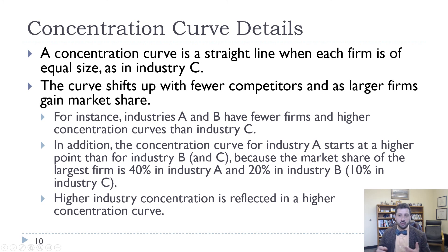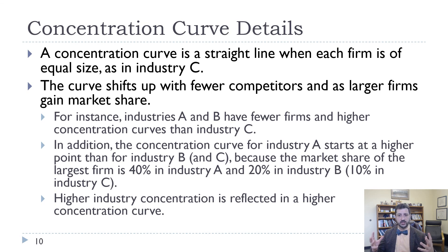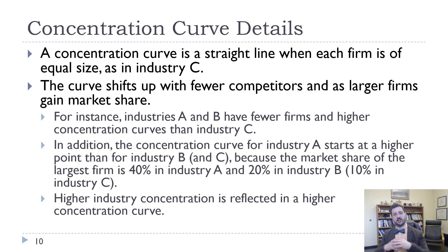A few things to note: in industry C, when all firms have the same market share, we get a straight line. The curve shifts up with fewer competitors and when larger firms have more market share. A and B have fewer firms, so higher concentration, placing them above industry C. Industry A starts at a higher point because its largest firm had 40% market share versus 20% in industry B. The higher the concentration curve, the more concentrated the market. That's a nice graphical tool. In the next video, we'll talk about ways to measure market concentration with a single number.